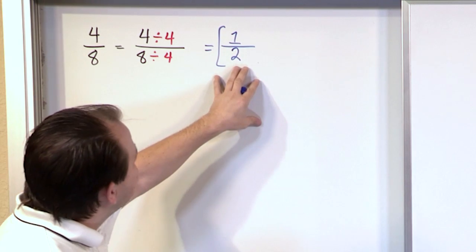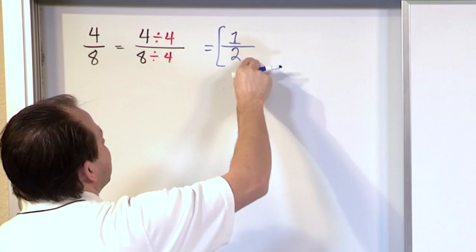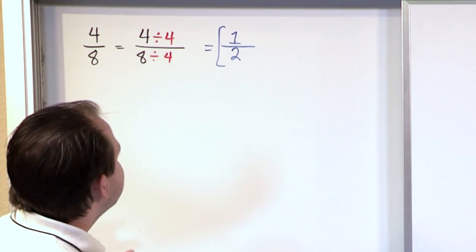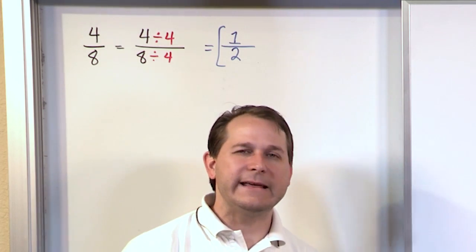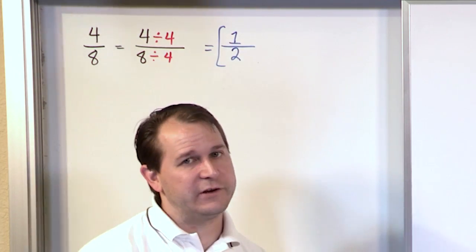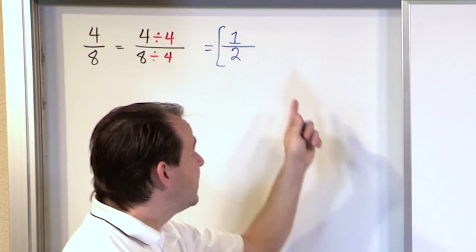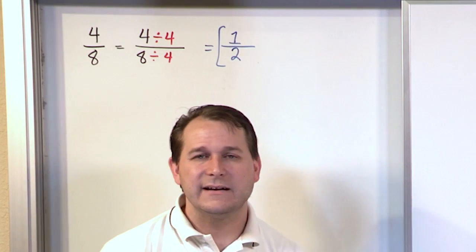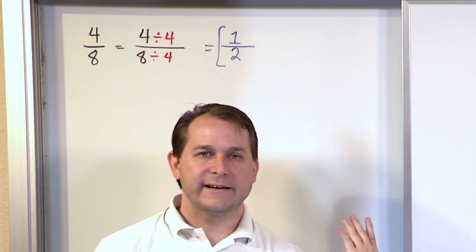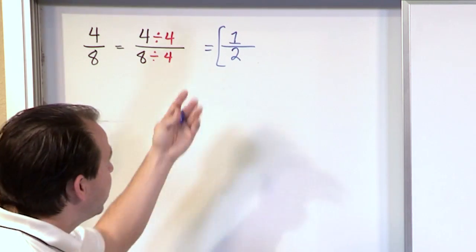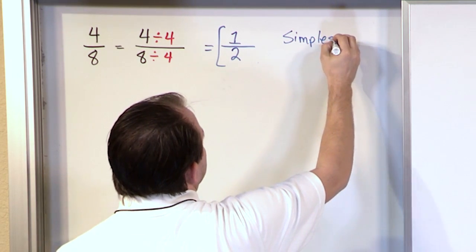So one half is what you'd call a simplified fraction. You look at your answer and ask: is there a number I can divide into the top and the bottom — other than one — that will make this simpler? The answer is no. Nothing else will divide evenly into the top and bottom. Dividing by one just gives you one half again — that doesn't make it simpler. So it's done. This is what you call simplest terms.